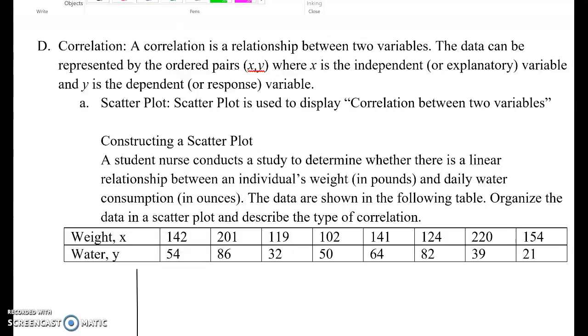In this case, we're using scatter plot to show two quantitative values correlation. So let's construct a scatter plot. A student nurse conducts a study to determine whether there is a linear relationship between an individual's weight and daily water consumption. The data are shown in the following table. Organize the data in a scatter plot and describe the type of correlation.